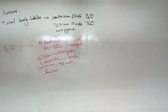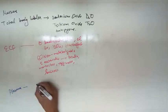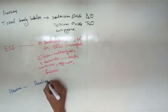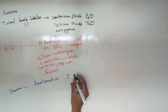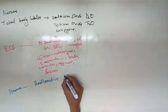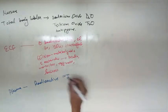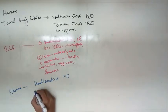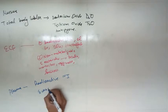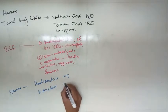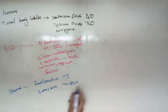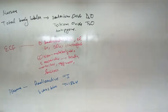Now, if you have to measure the amount of plasma, then either radioactive iodine — that is I-131 — or Evans Blue — that is T-1824 — is used. So these were some markers that are used.